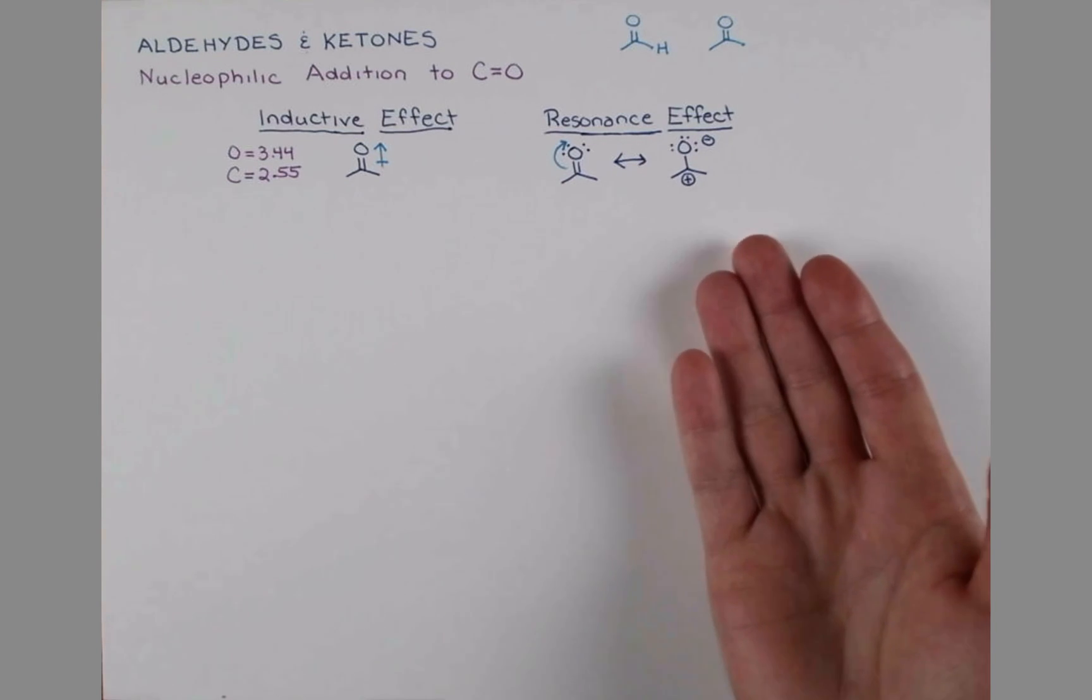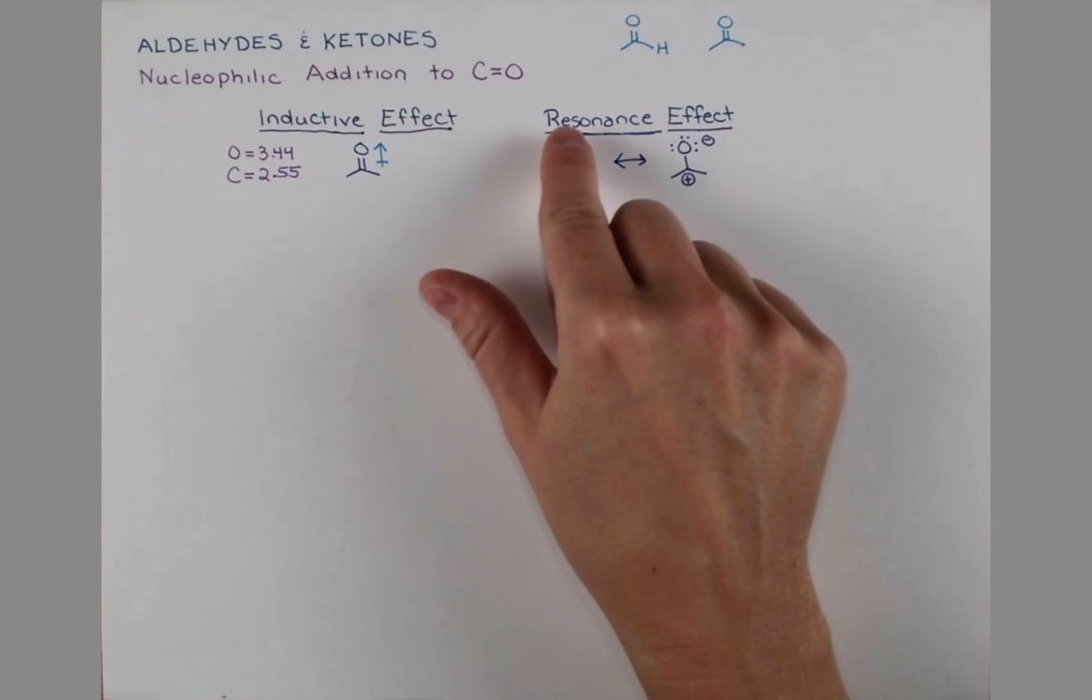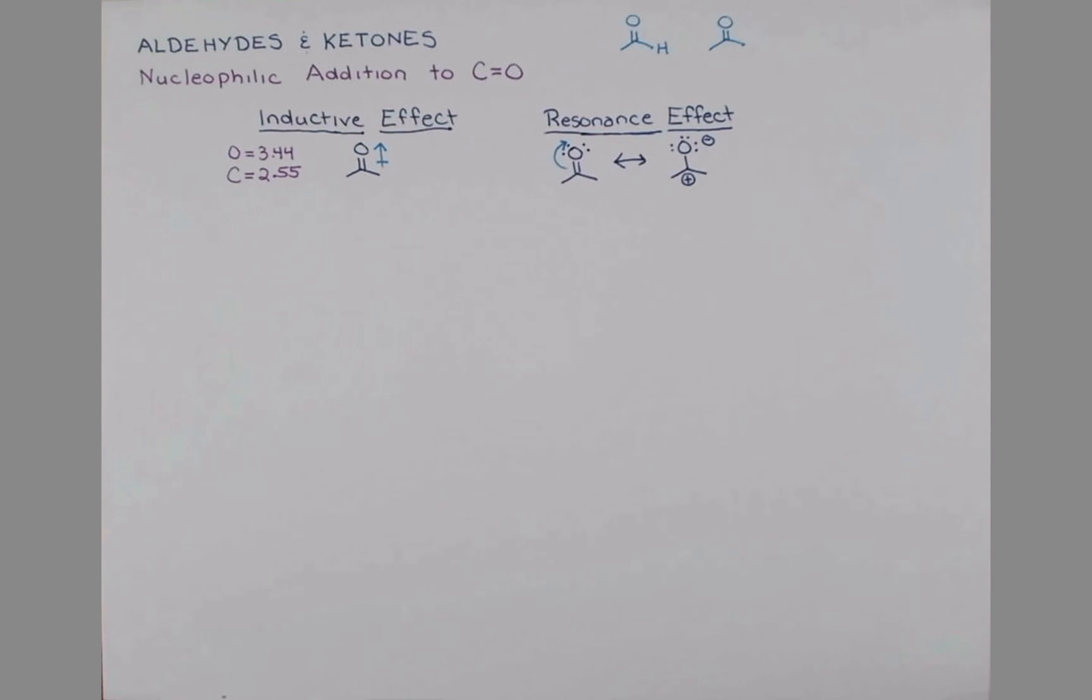We're going to be talking about the interaction with nucleophiles, things with extra electrons, things that attack. And so we're going to see interaction at this carbon. If you're really new to this, you might be like, how do I know to push my electrons up onto oxygen? Well let me show you what would happen if you pushed them the wrong way.